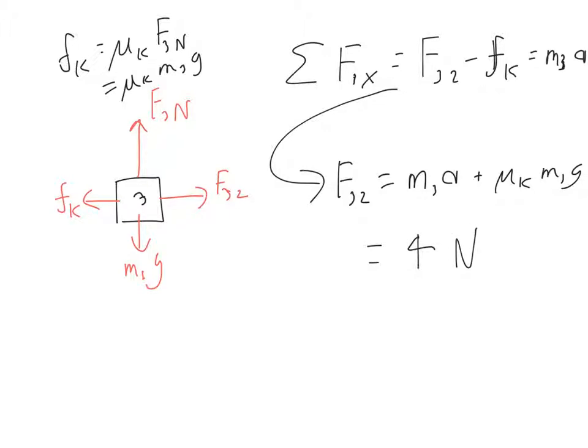Just remember, when you're plugging in for acceleration, you're plugging in negative 2.9—don't forget that minus sign. So that is the force of block 3 on block 2. We can now use that information maybe for looking at block 2.